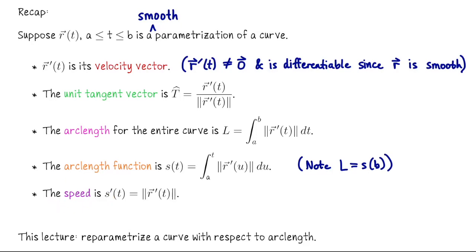I want to emphasize that the speed of the parametrization is the derivative of the arc length function. So if you see s prime, you need to think speed. s is the arc length function, s prime is speed. It's a little bit confusing because s sounds like speed, but it has to be s prime if we're talking about the speed.